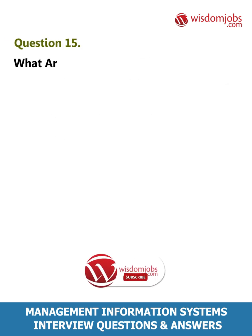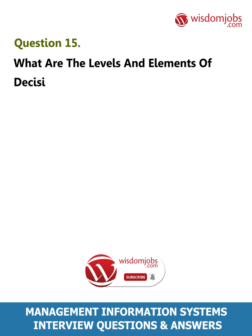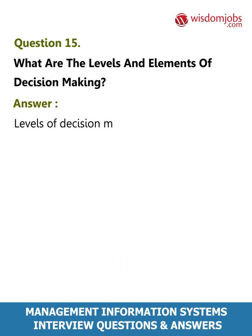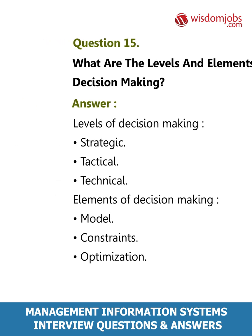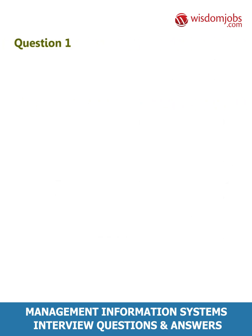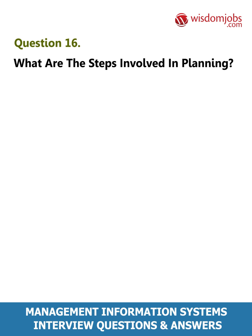Question 15: What are the levels and elements of decision making? Answer: Levels of decision making — strategic, tactical, technical. Elements of decision making — model, constraints, optimization. Question 16: What are the steps involved in planning?